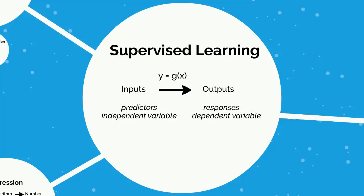In supervised learning, the machine learning program optimizes the parameters such that the approximation error is minimized — that is, our estimates are as close as possible to the correct values given in the training set. So we want to adjust G of X in our algorithm so that we minimize our approximation error.